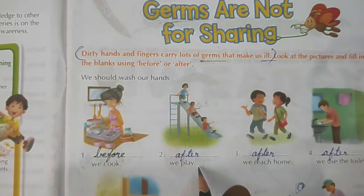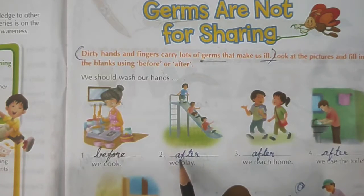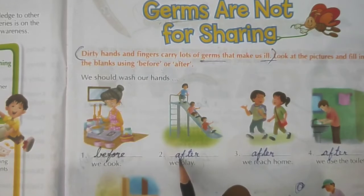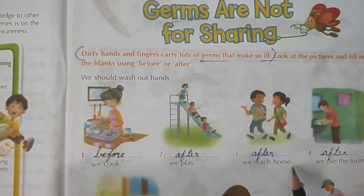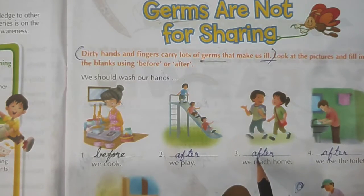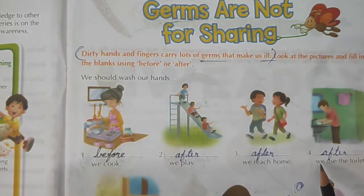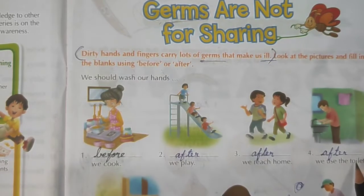After we play, we should wash our hands. Spell the word after: A-F-T-E-R. After we reach home, we should wash our hands — after. Spell: A-F-T-E-R. After we use the toilet, we should wash our hands.